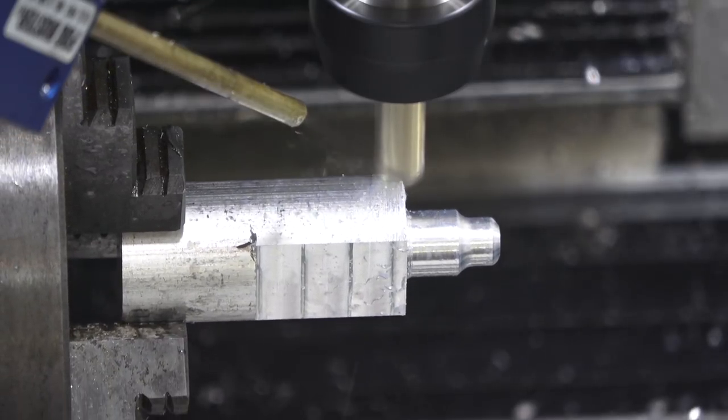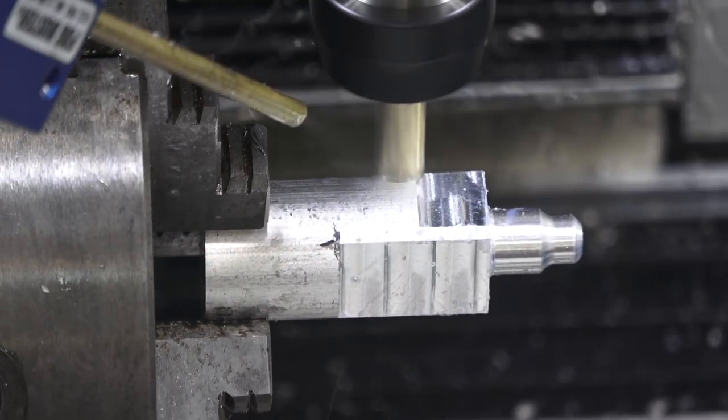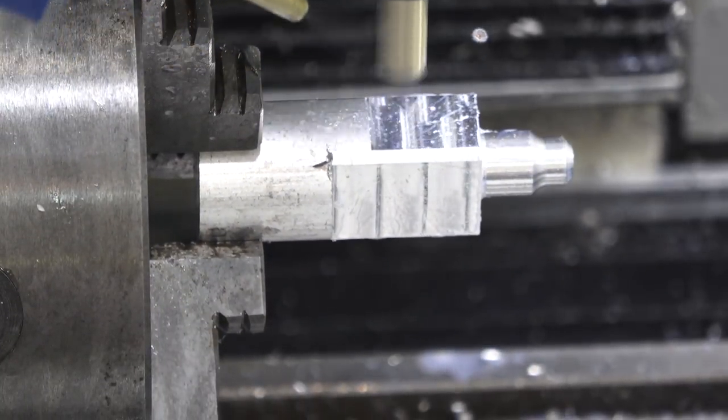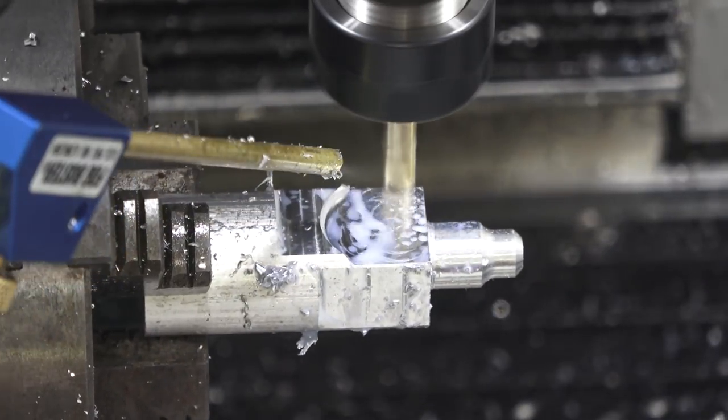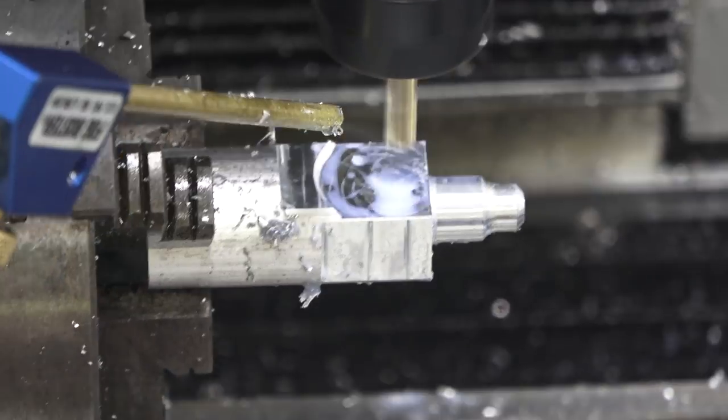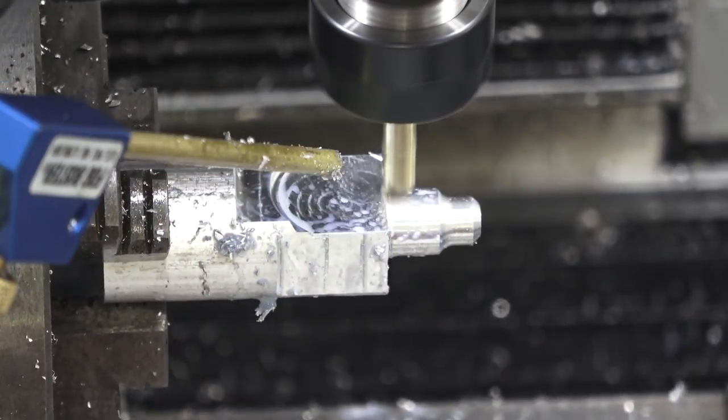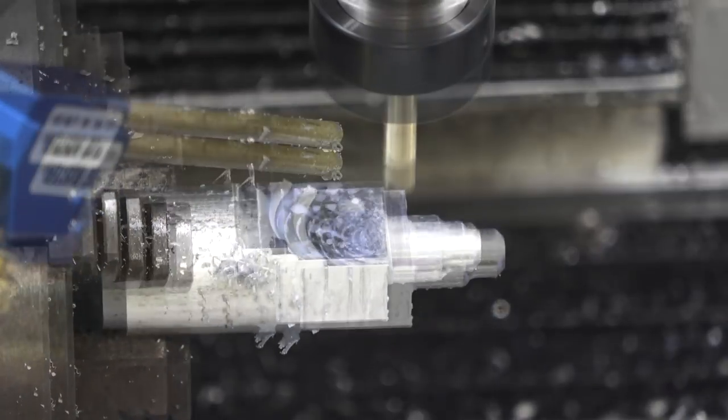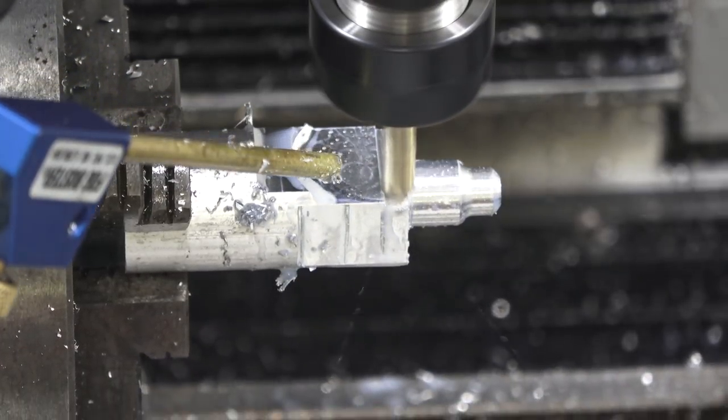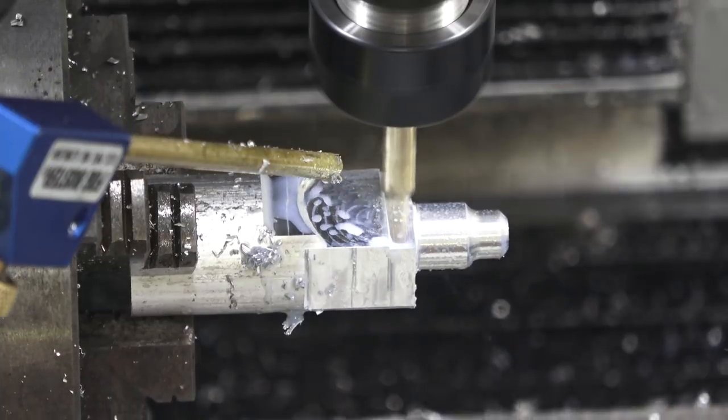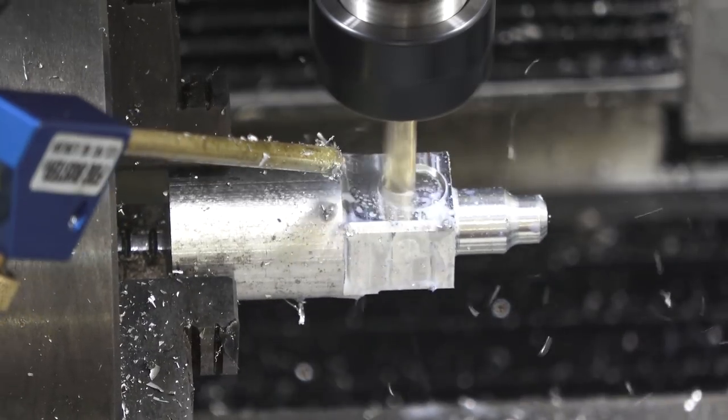Next, I move the part back over to the mill and put it in the fourth axis. The first step, as you've seen before, is to hog away the bulk of the material. And then I switch over to an adaptive pattern to begin cutting the major features of the part. Once that's done, I switch back to that parallel strategy to remove the tooling marks. Then I flip the part over and perform the same operations on the flip side.